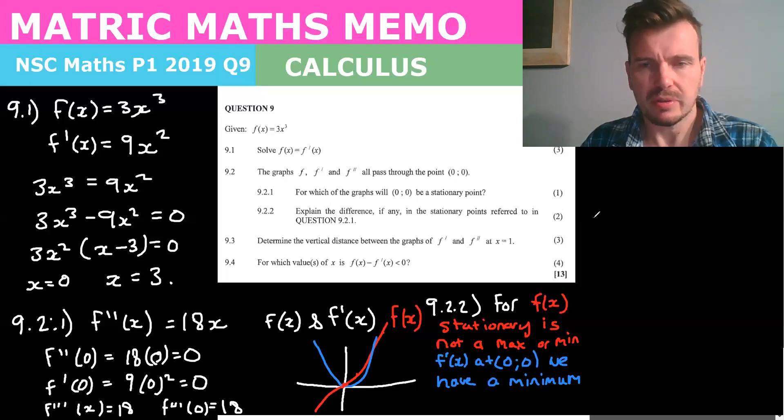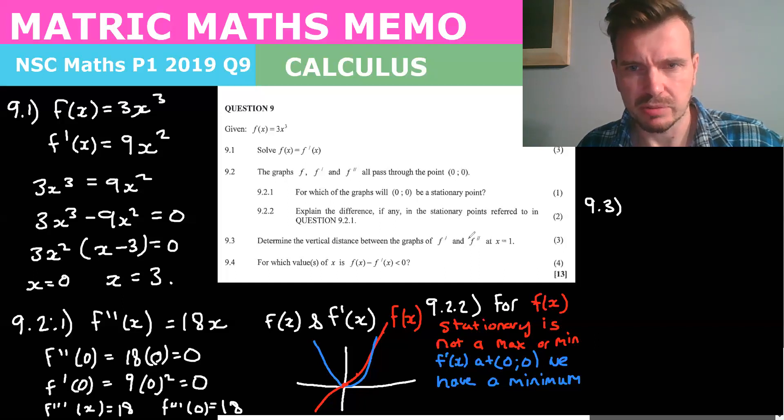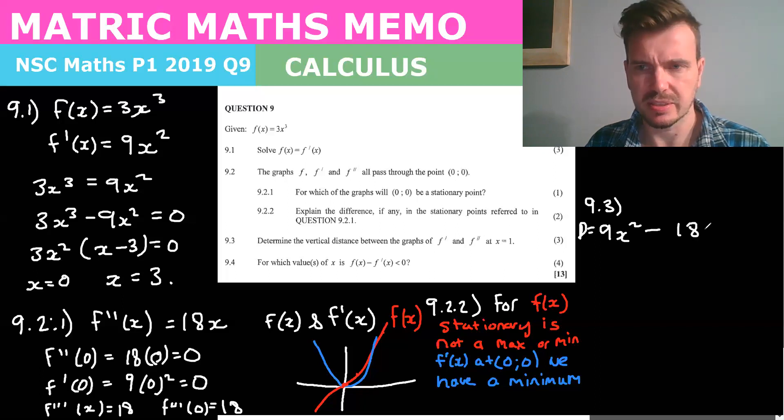Okay so now they want to determine 9.3 says determine the vertical distance between graphs f dash one and f double dash of x. So basically what that means is we just subtract the graphs from each other. So f dash of x we know is 9x squared and so we can say distance equals 9x squared minus 18x which is f double dash of x. And then we can just substitute in 2 for that.